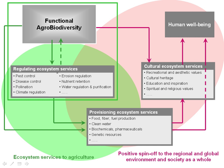Functional agrobiodiversity provides regulating, provisioning and cultural ecosystem services that are essential for human well-being. Positive synergies often exist among regulating, provisioning and cultural services and with biodiversity conservation, as can be seen from this conceptual diagram.